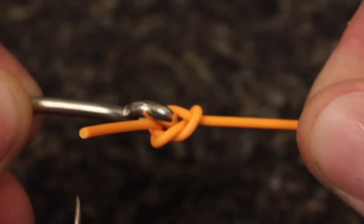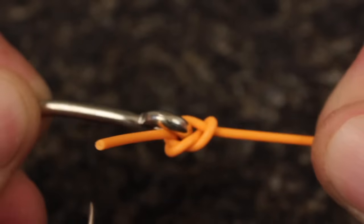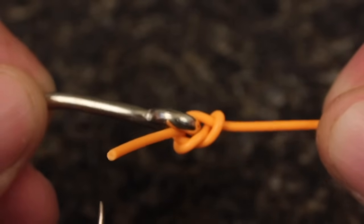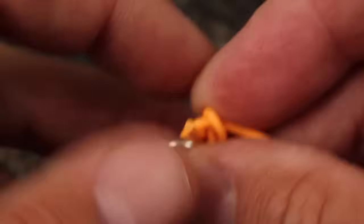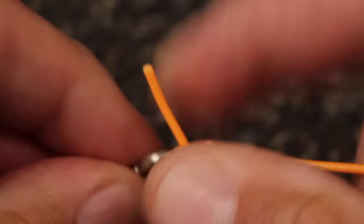Notice how the tag points slightly rearward and is positioned under the eye. What works better is having the tag contact the front of the eye and point outward at a 90 degree angle to the running line.